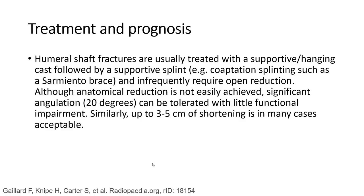Treatment and prognosis. Humeral shaft fractures are usually treated with a supportive hanging cast followed by a supportive splint, and frequently require open reduction, although anatomical reduction is not easily achieved. Significant angulation of up to 20 degrees can be tolerated with little functional impairment. Similarly, up to 3.5 cm of shortening is in many cases acceptable.